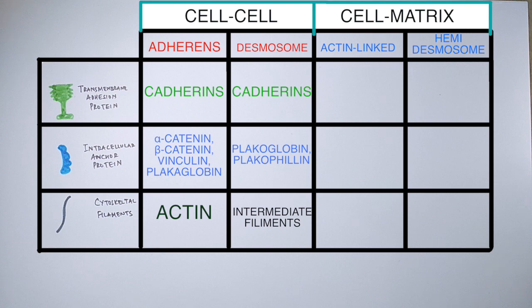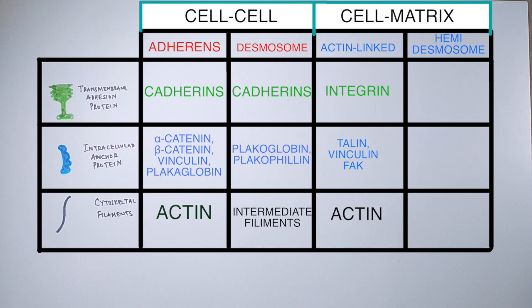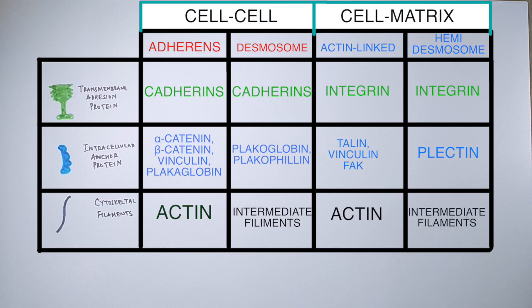In cell-to-matrix junctions, the actin-matrix linkage junction has integrin as the transmembrane linker protein. The anchor proteins are talin, vinculin, and FAK (focal adhesion kinase), and the cytoskeleton filaments are actin filaments. For hemidesmosomes, the transmembrane proteins are also integrin, the anchor protein is plectin, and the cytoskeleton filaments are intermediate filaments — similar to desmosomes.